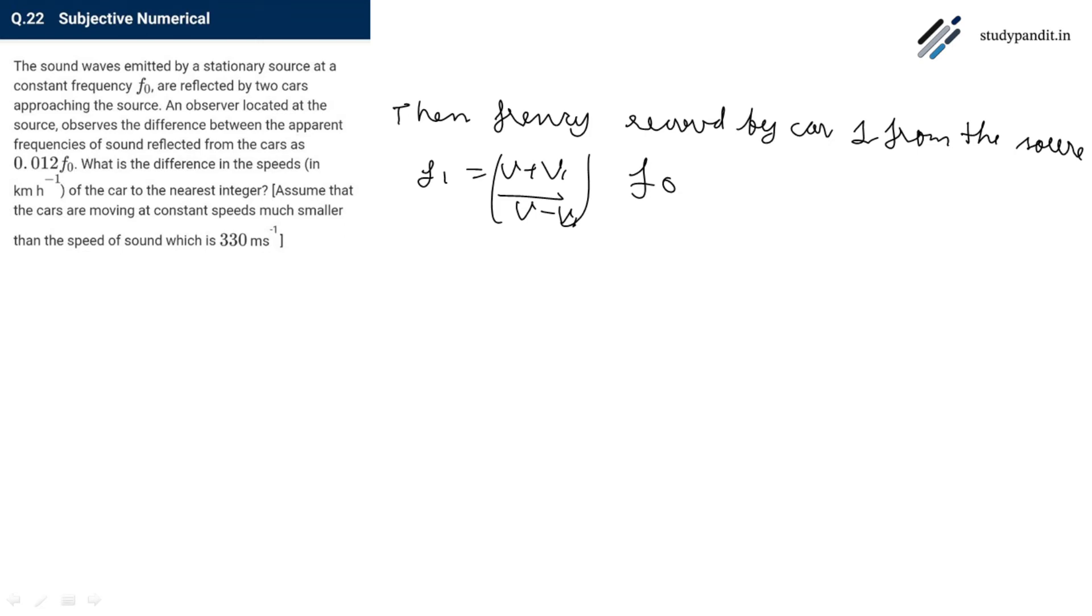The frequency received by car 2 from the source, F2 equals to V plus V2 by V minus V2 into F0.